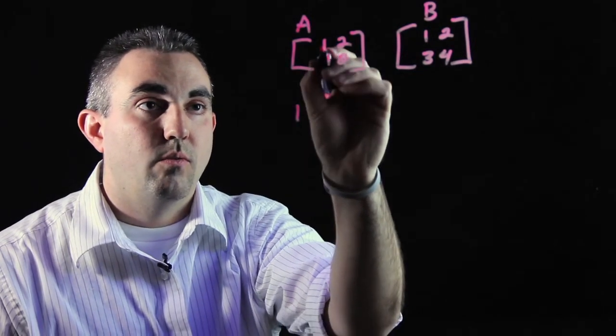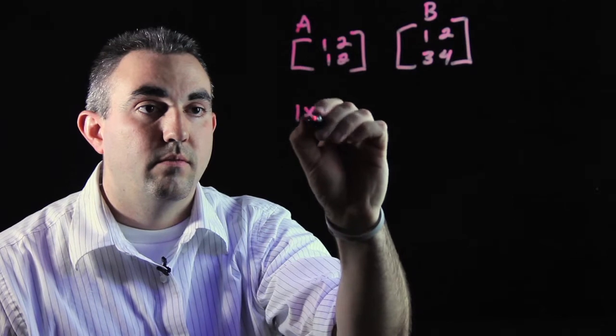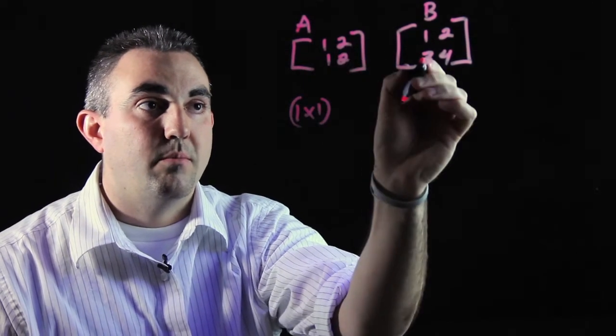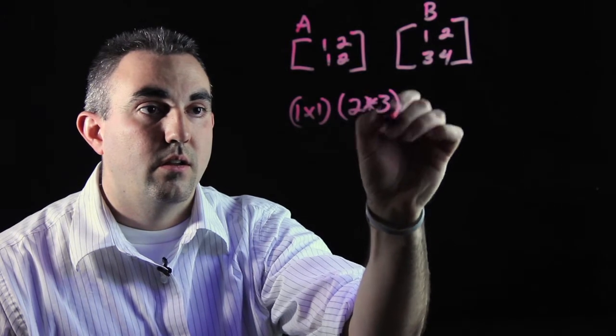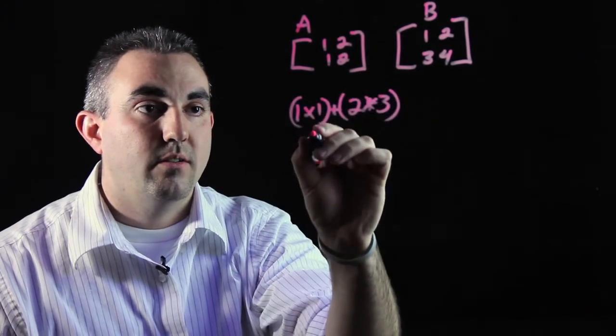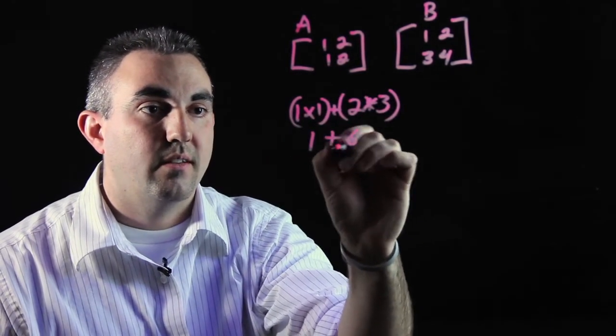So we're going to take 1 times 1 and 2 times 3. You're going to add those answers together. It's 1 plus 6 gives you 7.